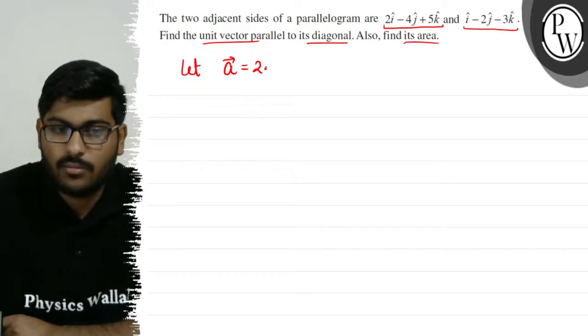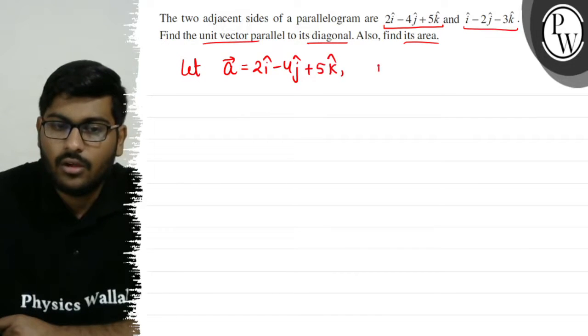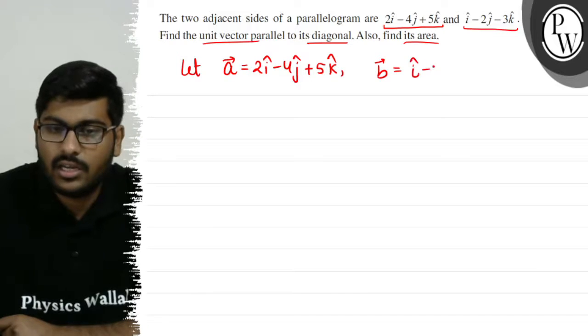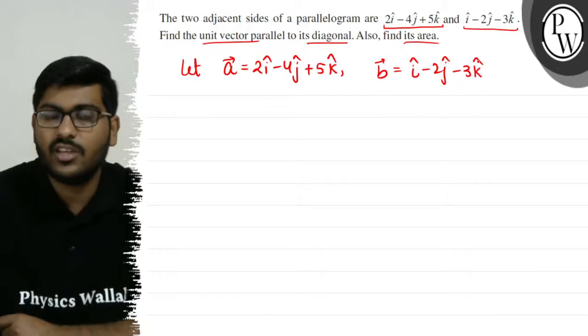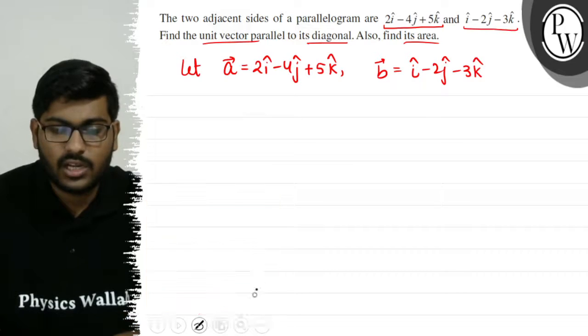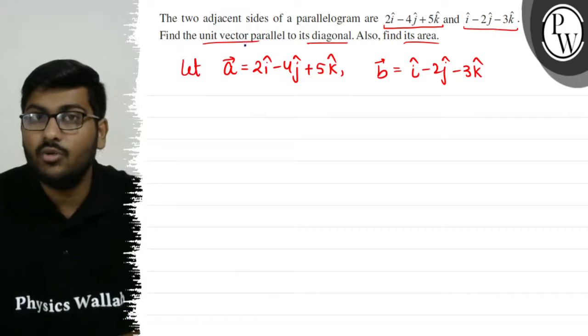Let's say A vector is 2i-cap minus 4j-cap plus 5k-cap, and B vector is i-cap minus 2j-cap minus 3k-cap. What do we want to find about the diagonal and unit vector parallel to it?